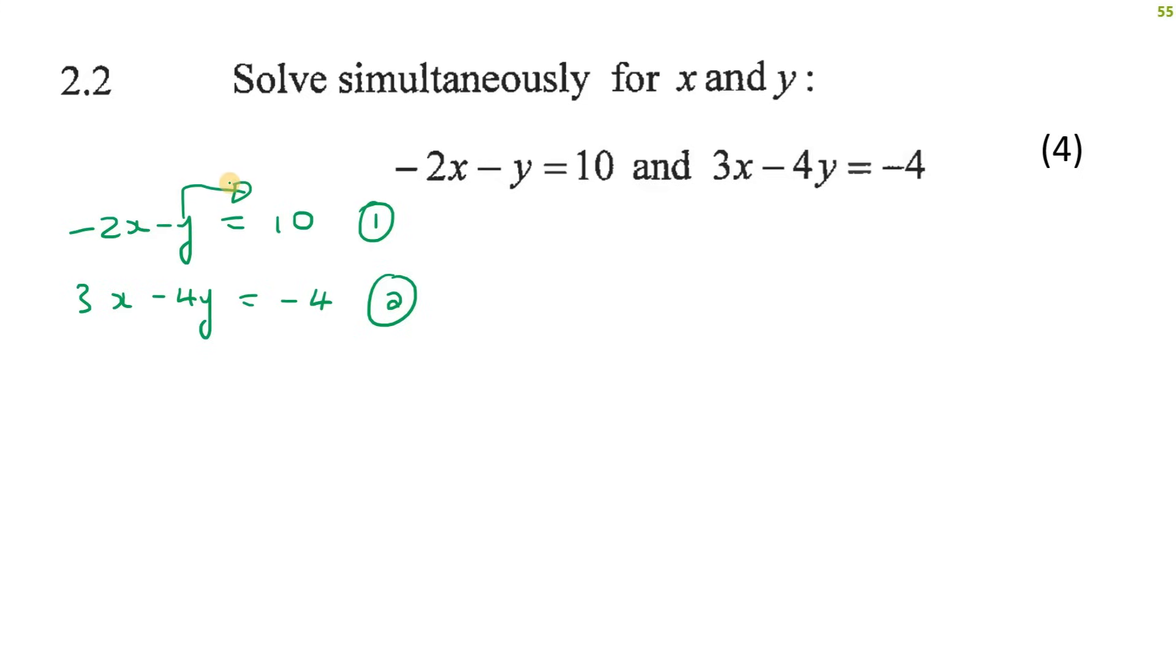So I'm going to take the y to the right and I'm going to take the 10 to the left. So you're going to end up with minus 2x minus 10. And then this y is going to become positive. And that is equation number three. You see how I have the y by itself.